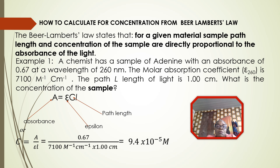To find concentration, C = A ÷ (ε × l), meaning absorbance divided by the product of the molar absorption coefficient and path length. Putting the values into the equation, at the end you will have 9.4 × 10⁻⁵ mol·L⁻¹. By doing that, you have calculated the concentration. You can also calculate for molar absorptivity using the same formula by making molar absorptivity the subject of the equation.